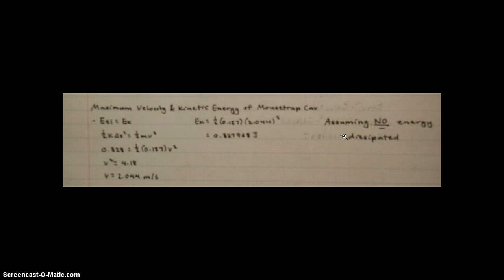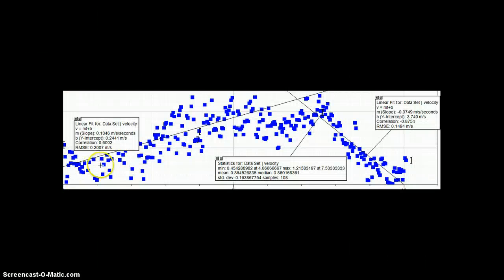These calculations are under the assumption that no energy is dissipated. So to find the acceleration of the car when it is speeding up and slowing down, we again look at the velocity time graph.